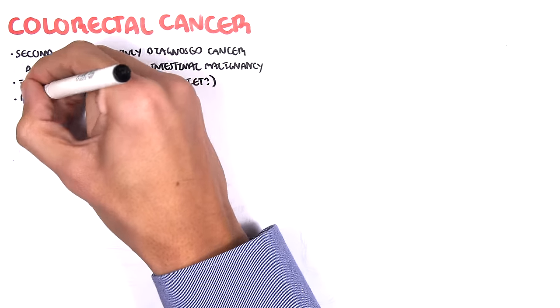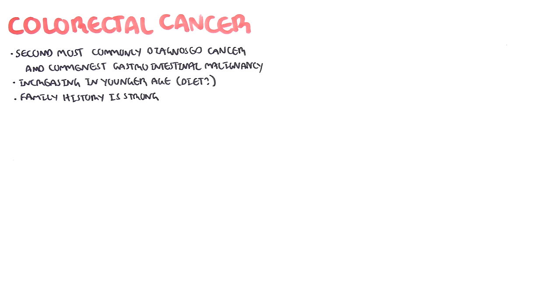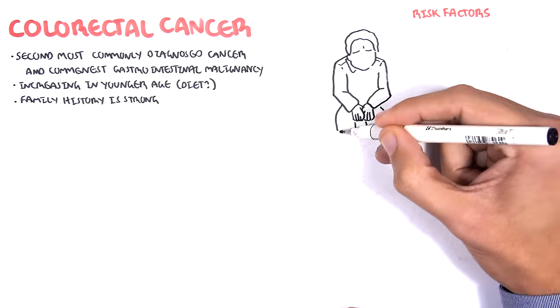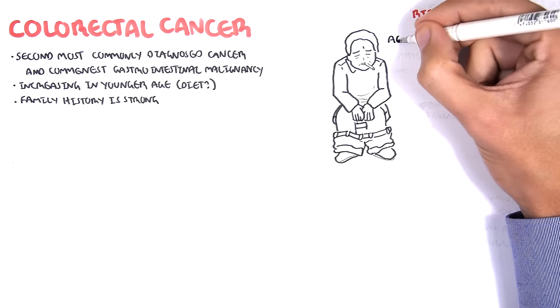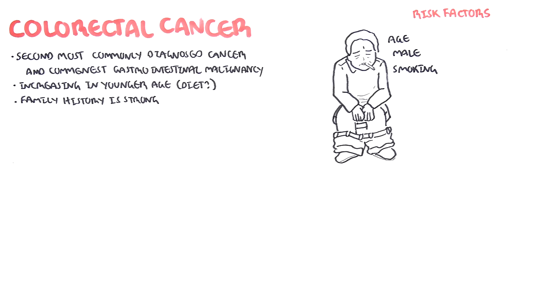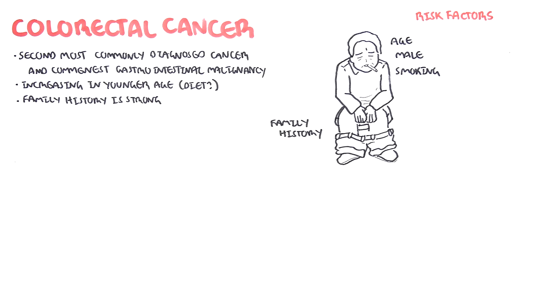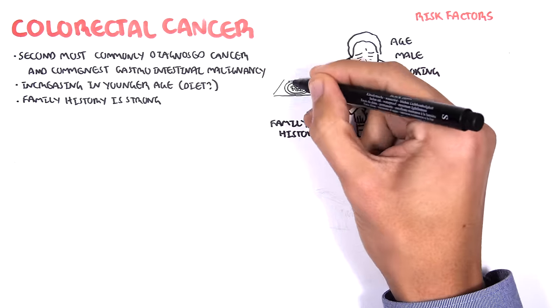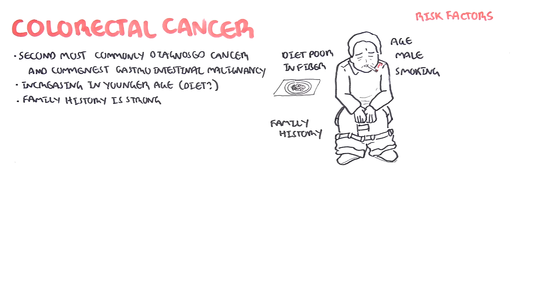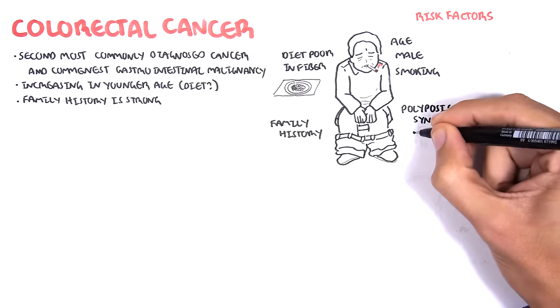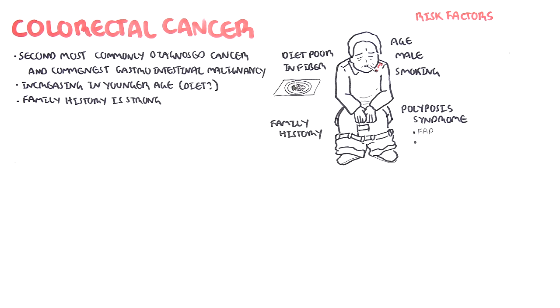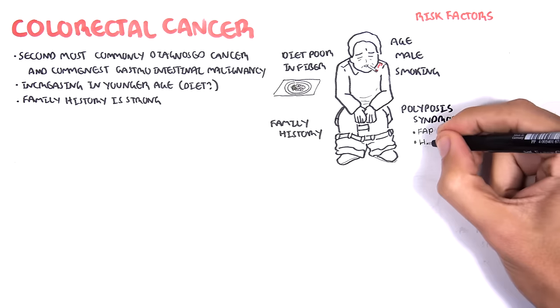Family history is strong in colorectal cancer. The risk factors for developing colorectal cancer include age, male sex, smoking, family history, diet high in red meat and poor in fiber, polyposis syndrome or FAP and HNPCC or Lynch disease.